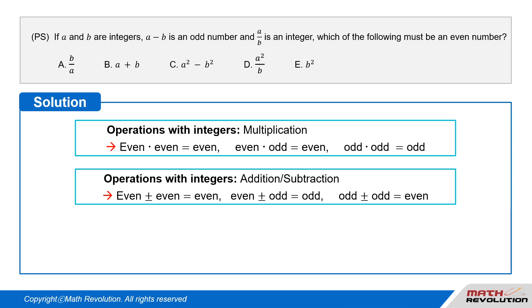Even plus or minus even equals even. Even plus or minus odd equals odd. And odd plus or minus odd equals even.